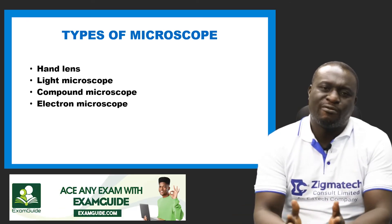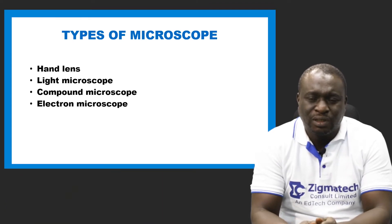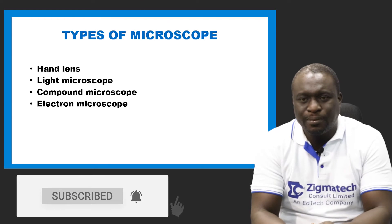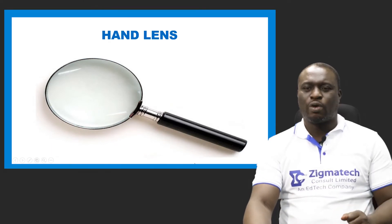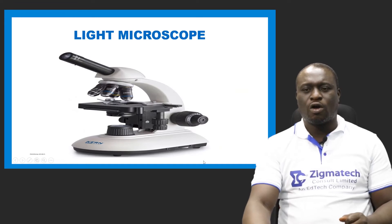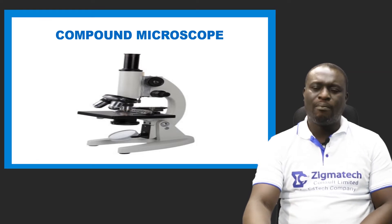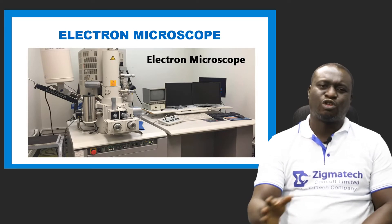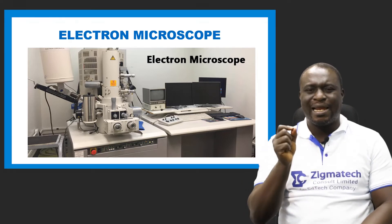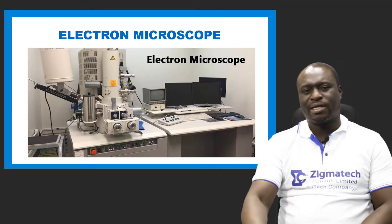There are four types of microscopes used in the biology lab: the hand lens, the light microscope, the compound microscope, and the electron microscope. Out of all four, the electron microscope has the highest magnification power.